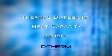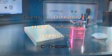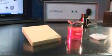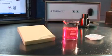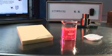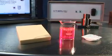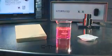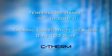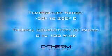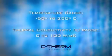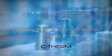The C-Therm TCI can test a wide range of materials including solids, liquids, powders, and pastes over a temperature range of minus 50 to 200 degrees Celsius.